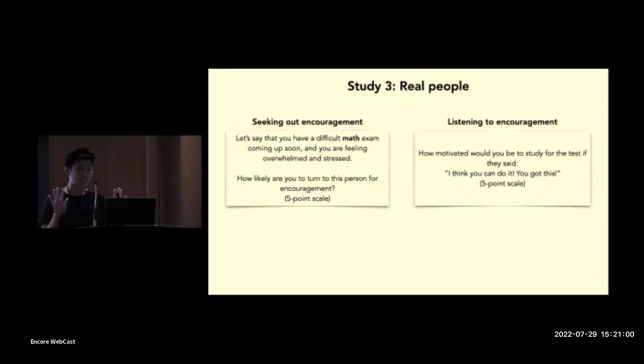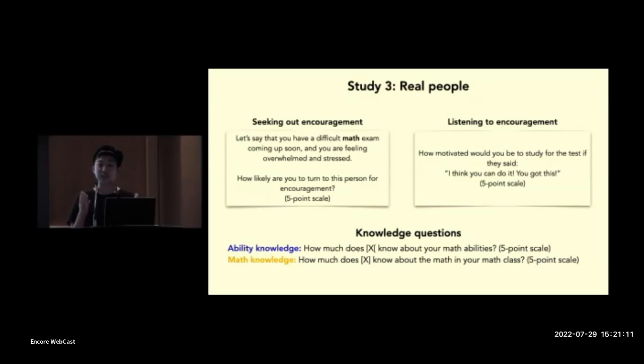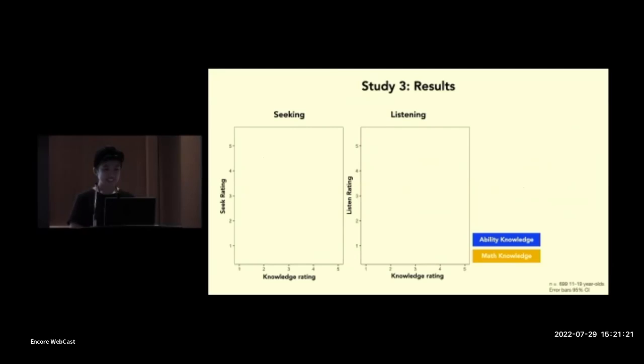Okay, so then participants responded to similar test questions as in study one for each person. They were asked how likely they would be to turn to each of them for encouragement and how motivated they would be given encouragement. And then at the very end of the task, we asked participants to rate each person's math ability knowledge and math knowledge. And then we use these knowledge ratings to then predict participants' responses to the seeking and the listening questions. Okay, so let's think about this before I show you the results. So when it comes to thinking about real people in their lives, students may be thinking about all sorts of things like how supportive this person is, how kind they are, or they may just generally trust feedback from particular types of people like their friends or their peers. So it's very possible that in the real world, ability and math knowledge might not predict students' responses to the test questions. But remarkably, we see that they actually do.